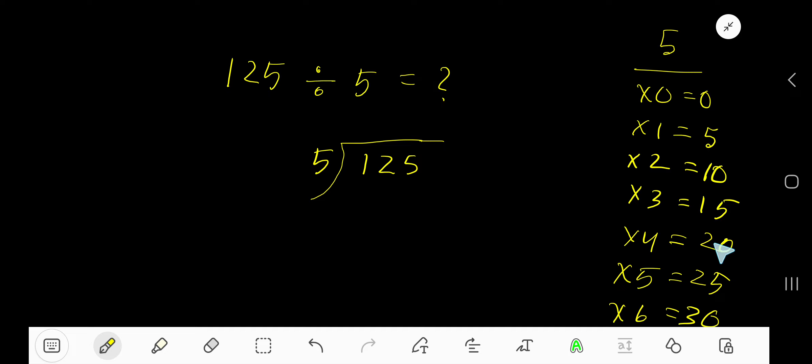Look, 5 goes into 1 how many times? 0 times, as 1 is less than 5. So 0 times 5 is 0, subtract 1, bring down this 2. Now we have 12.